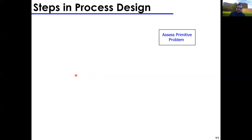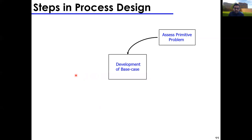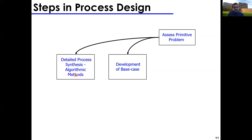Moving on, here are the basic steps in process design from an algorithmic perspective. First, you assess the primitive problem: why do I need to develop this process? Is it new feasible chemistry, a strong market demand, or an unsafe/unreliable existing process? Then you develop a base case — a high-level design of the proposed plant: identify the reactor, a couple of separators, stoichiometry check, major pumps — a sketch of your process.